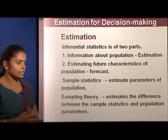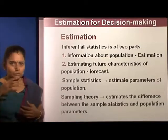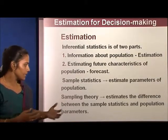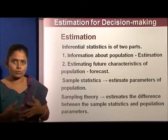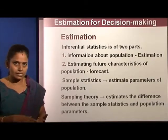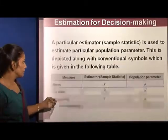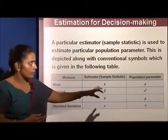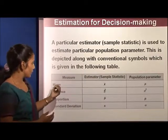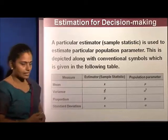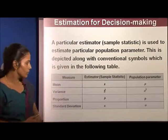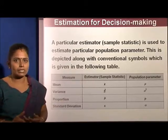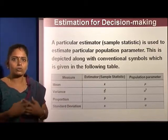Sample statistics help us estimate the parameters of the population, and sampling theory helps us estimate the difference between the sample statistics and the population parameter. For example, for the mean, the estimator (sample statistic) is x-bar and the population parameter is mu. Similarly, we have estimators for variance, proportion, and standard deviation.